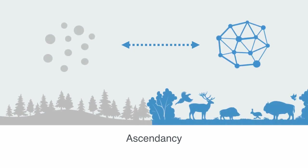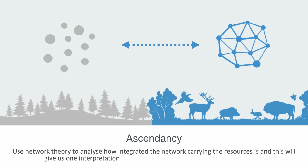Ascendancy is a key index in determining the ability of an ecosystem to prevail against disturbance by virtue of its combined organization, connectivity, and size. This can be illustrated by analogy to the difference between a living and dead organism — interpreted as simply the volume of resources flowing through the system. The greater the flow, the greater the vitality, meaning more ascendancy. We can use network theory to analyze how integrated the network carrying resources is, giving some interpretation to the robustness of the ecosystem. On aggregate, this network integrity is traditionally understood in terms of habitat fragmentation.